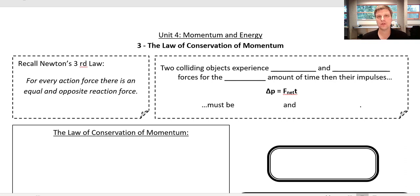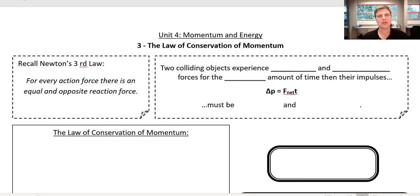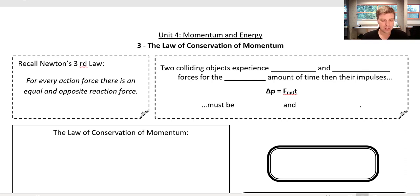This is going to be really useful for describing anytime there's an interaction between two objects — like a bowling ball hitting a bowling pin, or two cars colliding, or something where one object runs into another. We're going to be able to describe the motion before and after by looking at the momentum of the two objects.